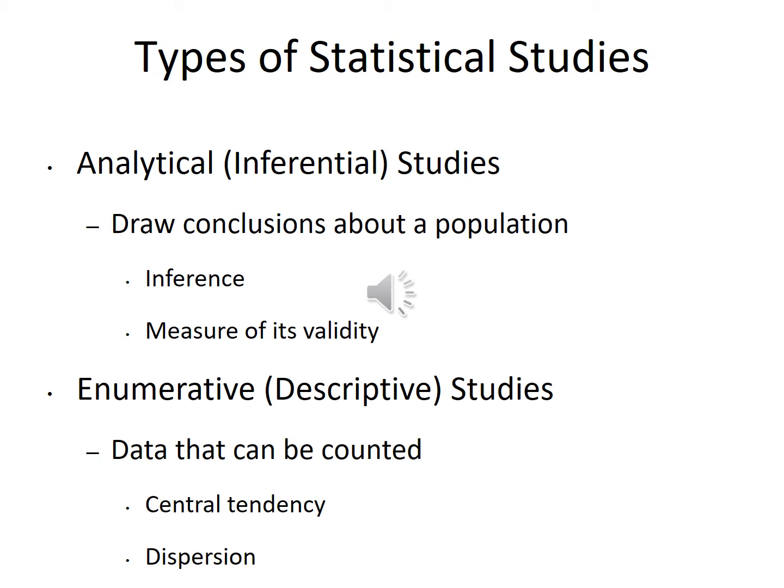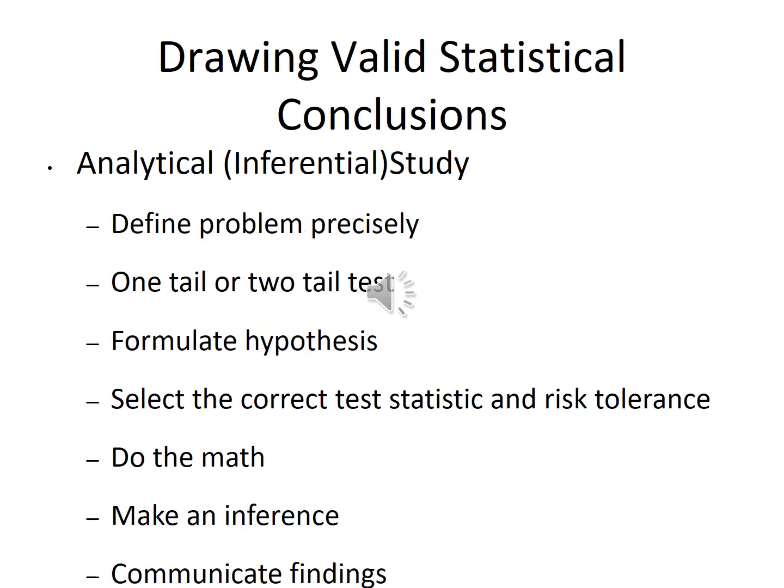The other type is enumerative or descriptive studies — basically you just take data that can be counted. You get the average and standard deviation. We actually want to work more with the analytical approach; we don't want to look at everything, but we do want to take enough samples to draw a valid inference about the population.